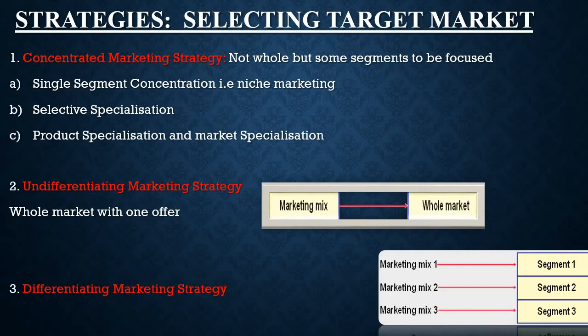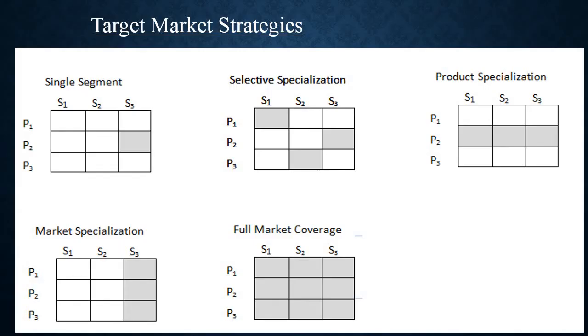When selecting a target market, we have various strategies. First is concentrated marketing strategy — when you are not focusing on the whole market but on some segments. Here we can focus upon a single segment (like Nike marketing), go for selective specialization, or go for product specialization. In single segment concentration, you focus upon one product in one segment. In selective specialization, you focus upon a different product in every segment. In product specialization, you are specialized in one product and the same product is offered in all segments.